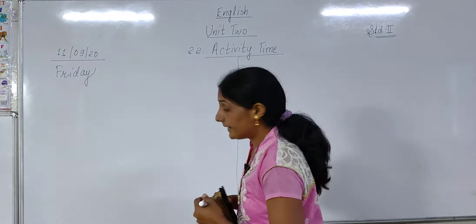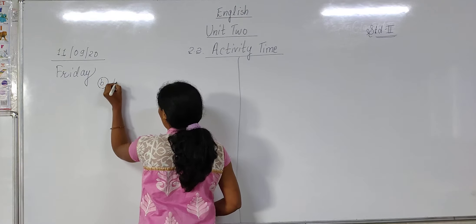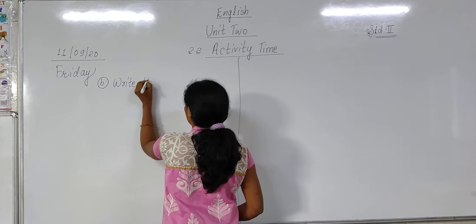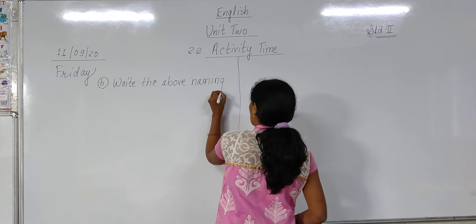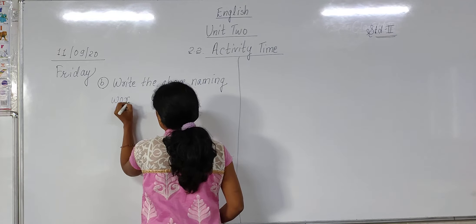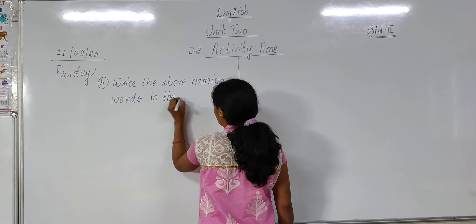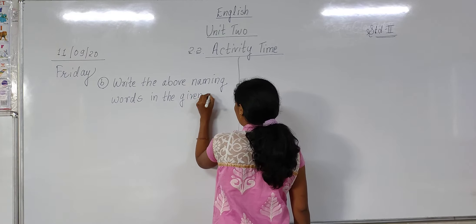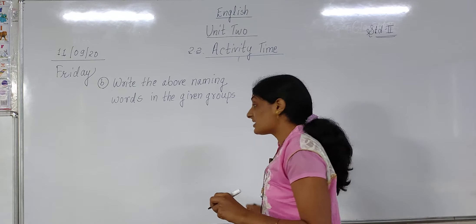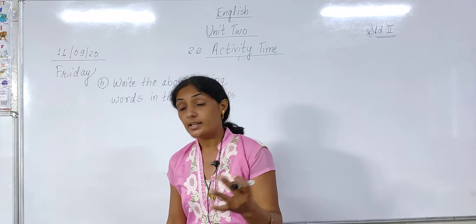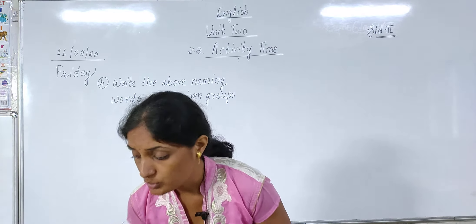The question says: write the naming words in the given groups. Now, how many groups are there? We have flowers, fruits, animals, and vegetables. So we are going to make four groups.